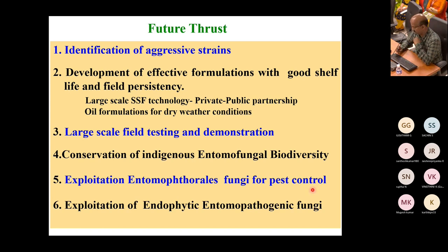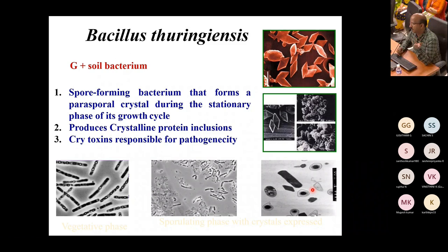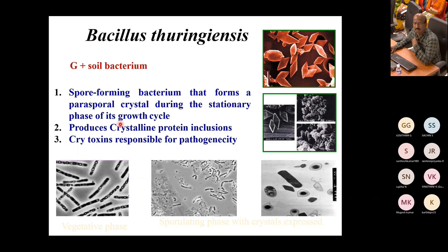Coming to bacteria — Bacillus thuringiensis. This is a spore-forming, gram-positive bacterium that forms para-sporal crystals during the stationary phase of growth. This work is being done in our institute by my colleagues Dr. Rangeshwaran and Dr. Manjunat. The crystalline protein inclusions — cry toxins — are most responsible for pathogenicity.